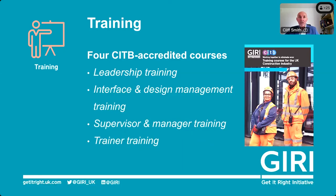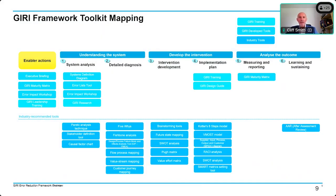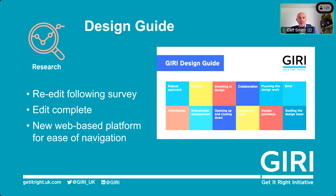These are the courses we offer: leadership training, interface training, and supervisor and manager training, developed originally in 2019. More recently we have train-the-trainer, with four tier-one contractors now approved training providers. Last year we invested in developing a framework to provide a systematic approach to error reduction. In 2018 a group of GIRI members — clients, contractors, consultants and the supply chain — collaborated in the creation of our design guide, applicable to any project particularly at commencement and during early design stages.